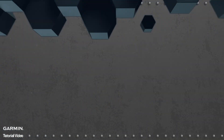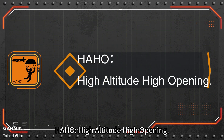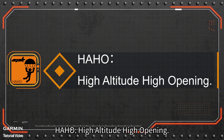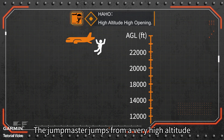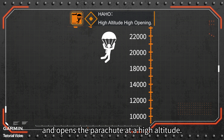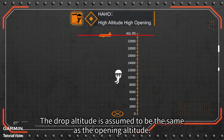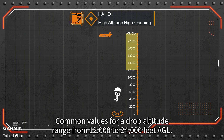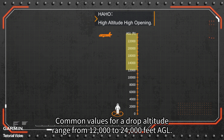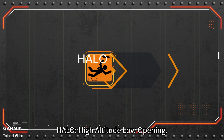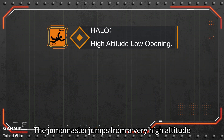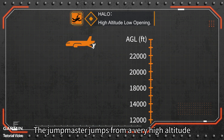HAHO — High Altitude High Opening: the jump master jumps from a very high altitude and opens the parachute at a high altitude. You must set a dip and a drop altitude of at least 1000 feet. The drop altitude is assumed to be the same as the opening altitude. Common values for a drop altitude range from 12,000 to 24,000 feet AGL.